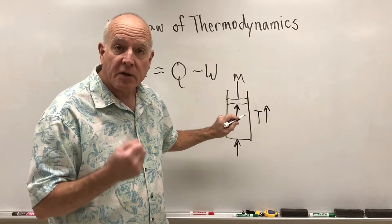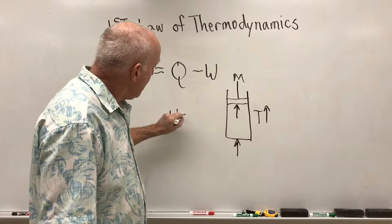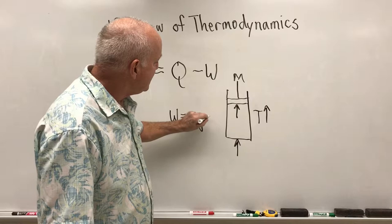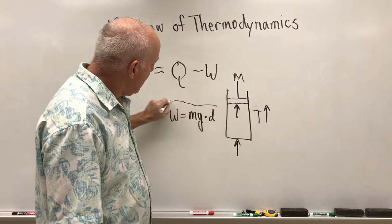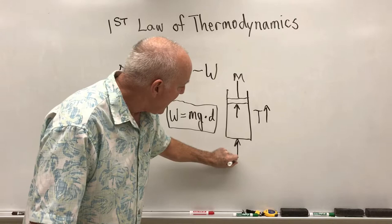We know that the amount of work that's performed is equal to the force, which is mg, times the distance that force is acted on. So we could say that this amount of energy was turned into work, and that the total amount of energy added, Q, minus the work is the change in temperature of the gas.